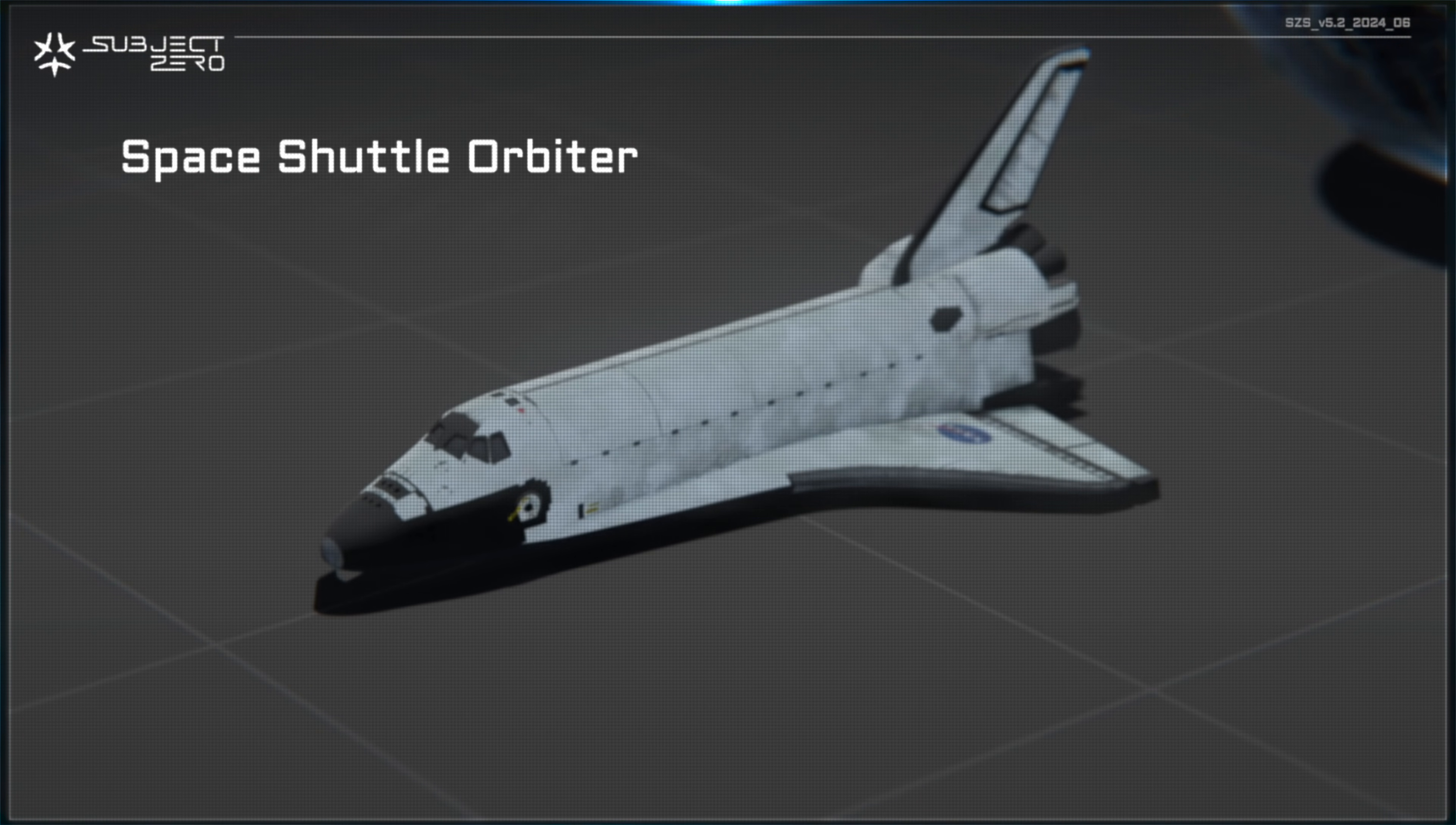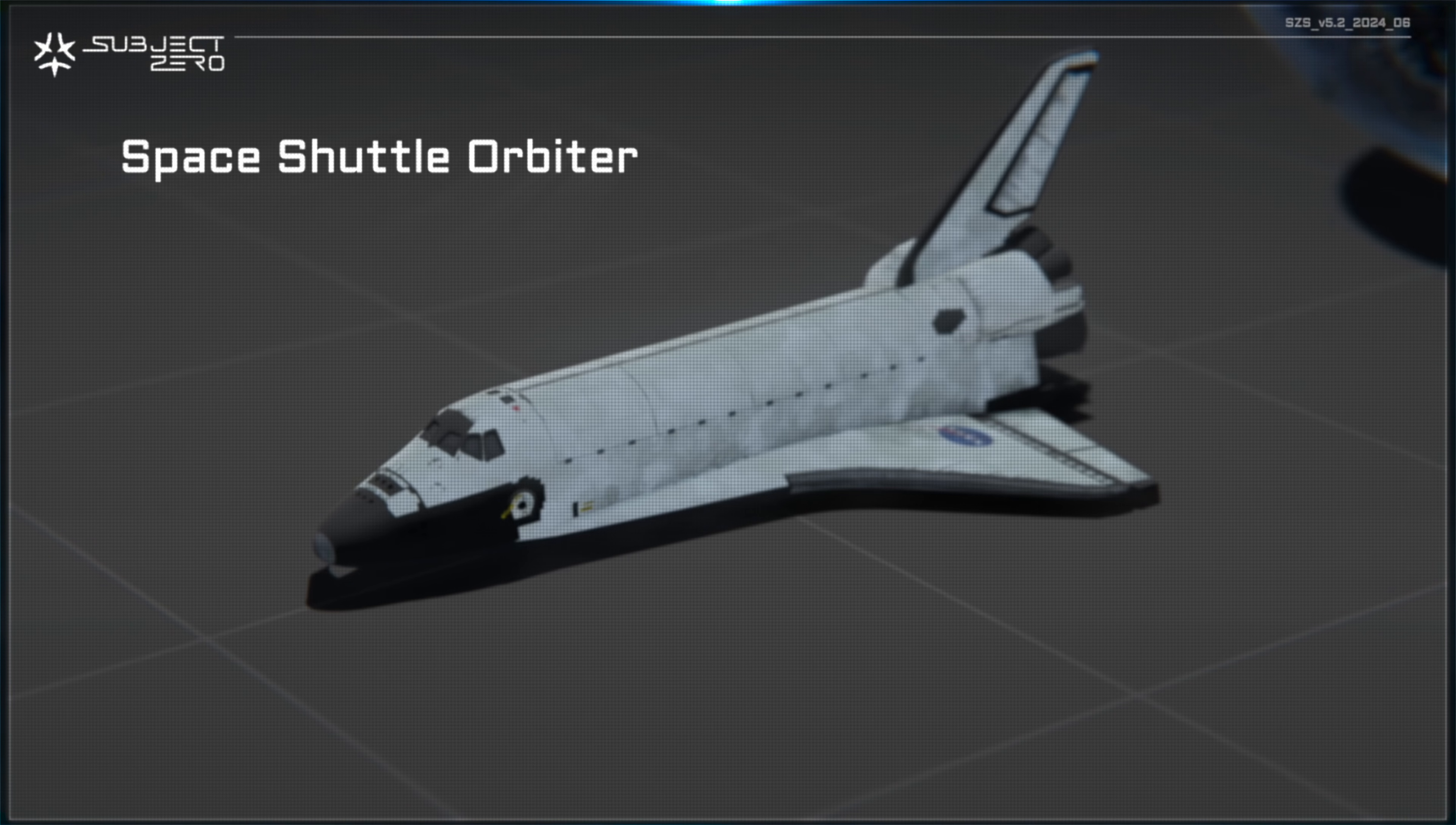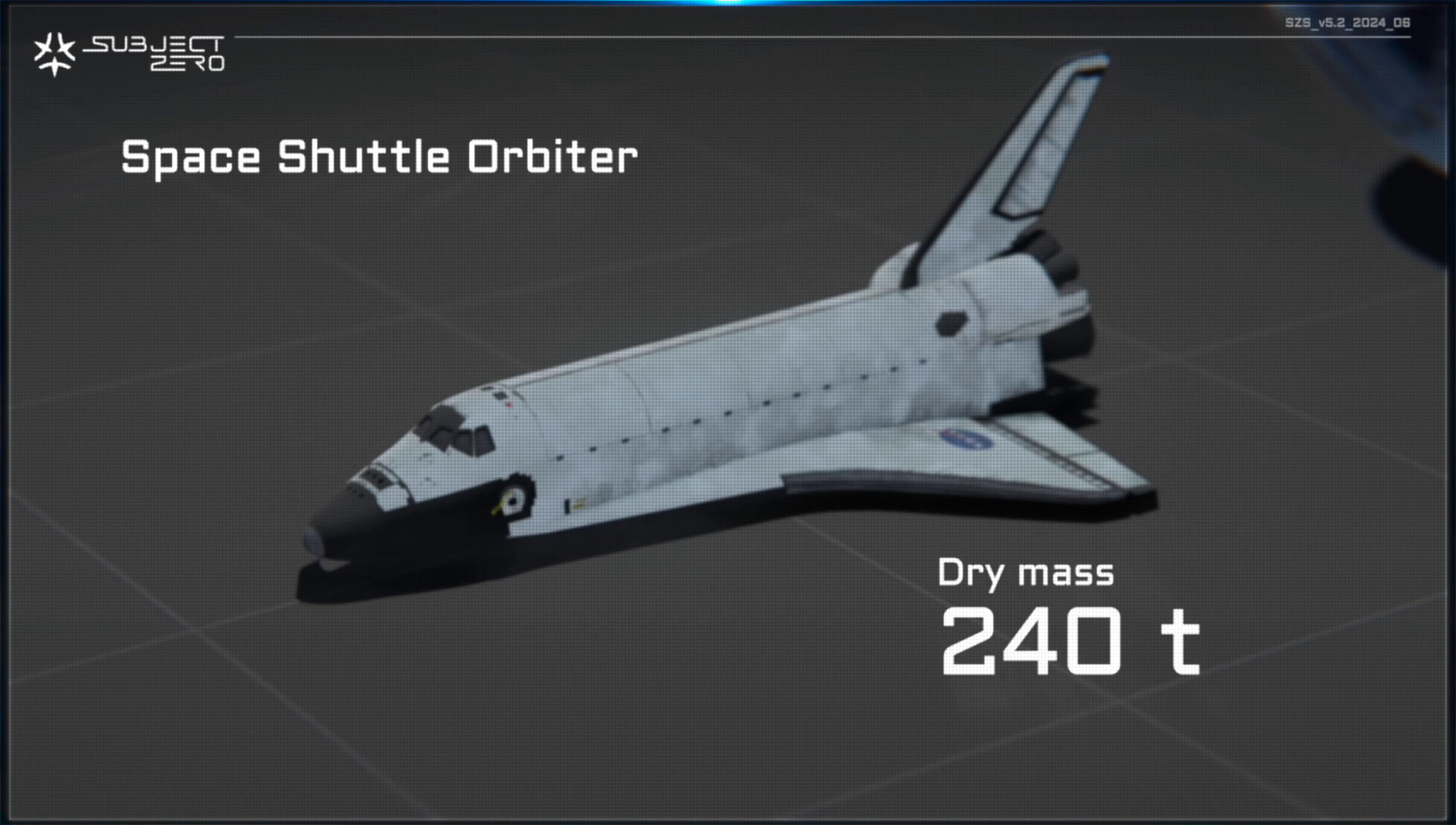For calculation's sake, let's consider a spaceship with the same mass as the space shuttle orbiter, 200 tons plus engines.